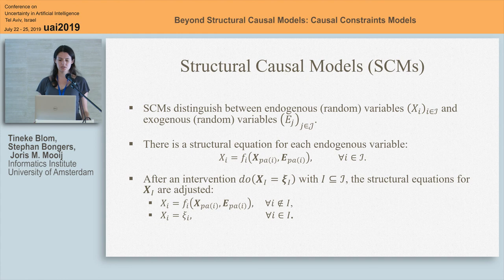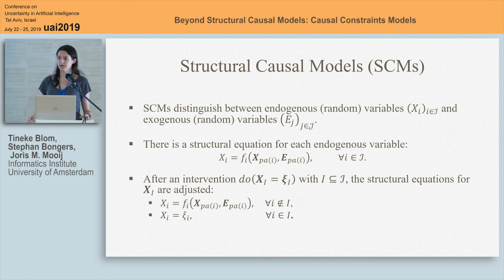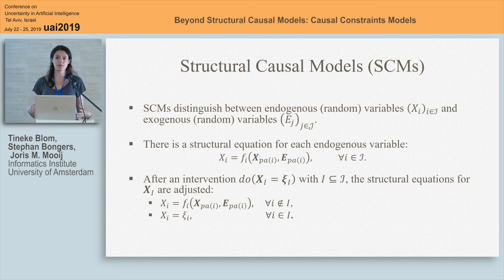SCMs distinguish between endogenous variables and exogenous random variables, and there's a structural equation for each endogenous variable. These have a particular form where on the left-hand side we have an endogenous variable X_i, and on the right-hand side we have a function or causal mechanism that determines the value of that variable. This function takes as inputs the other variables in the system. We can also model causality by modeling interventions, and this is done by equation replacement.